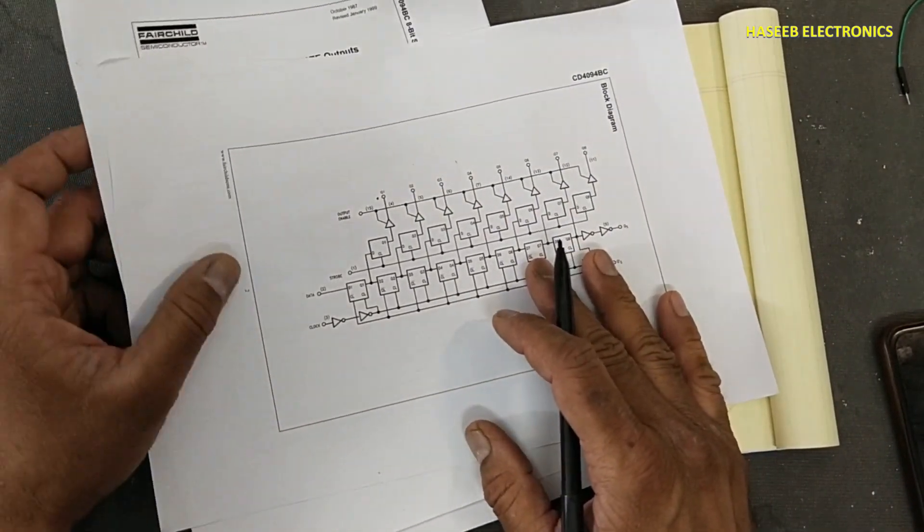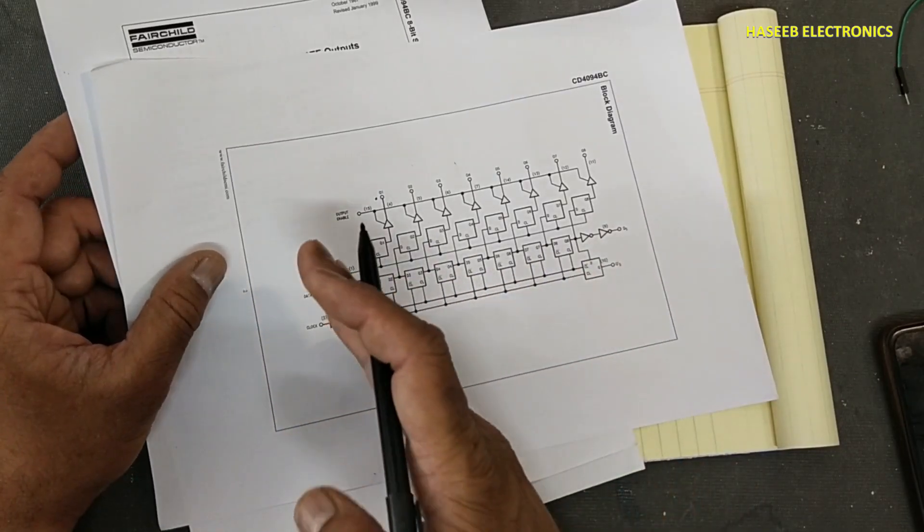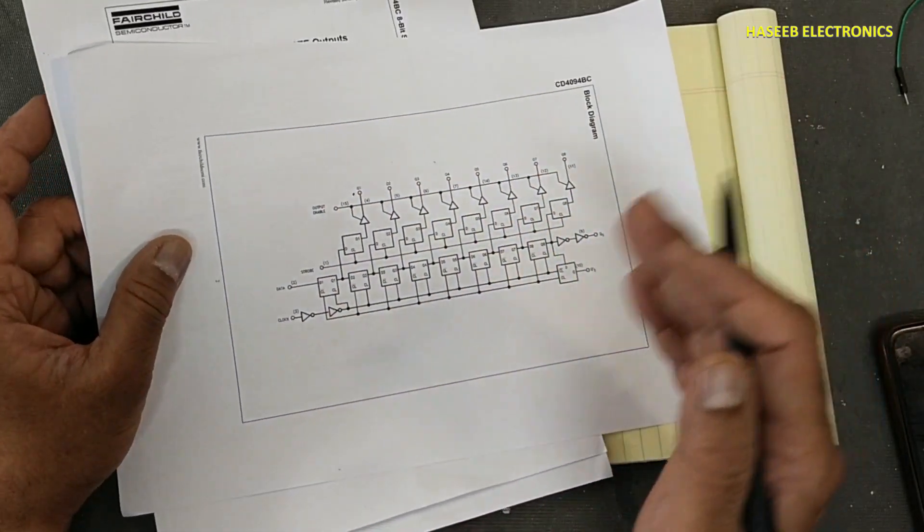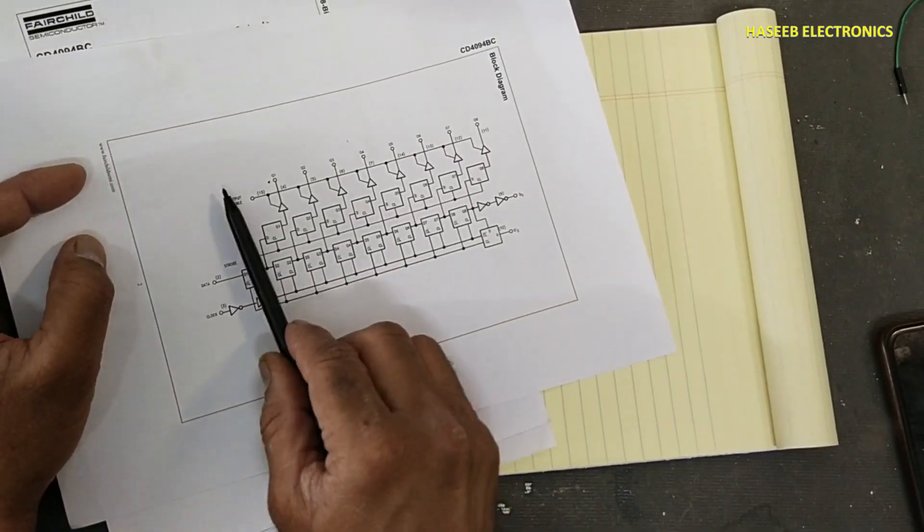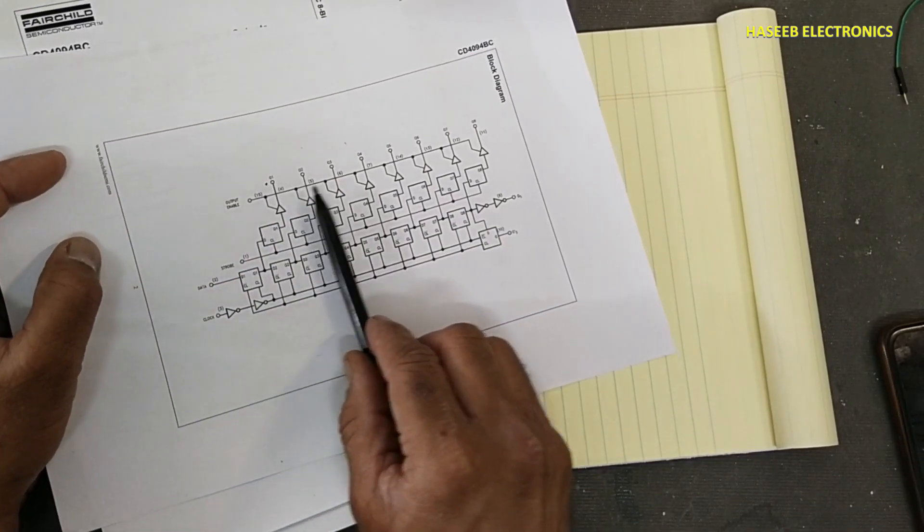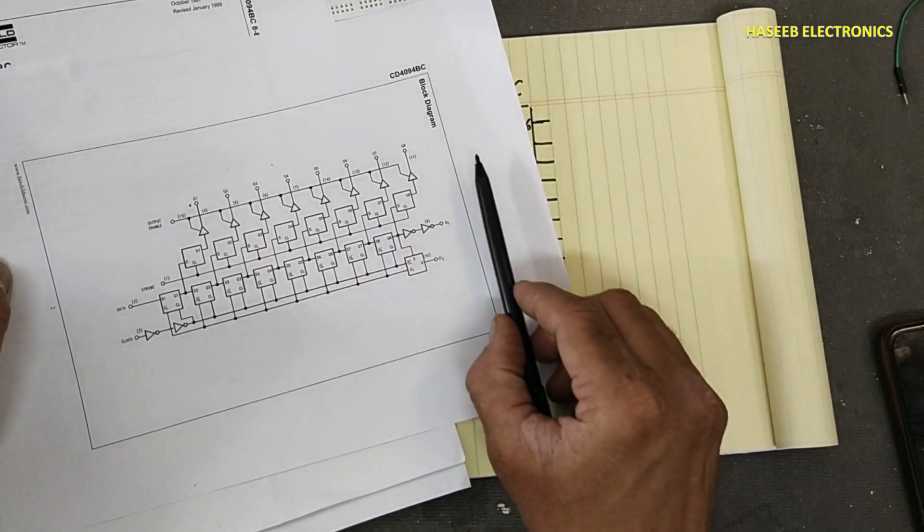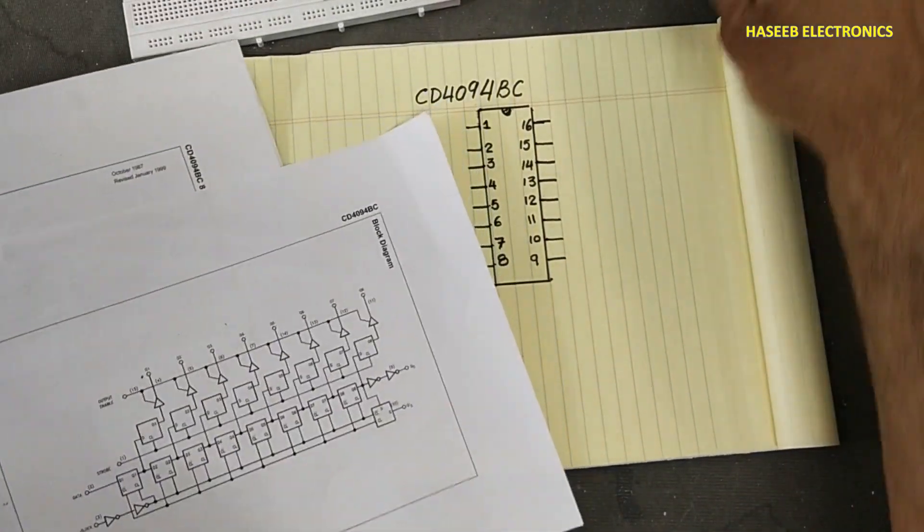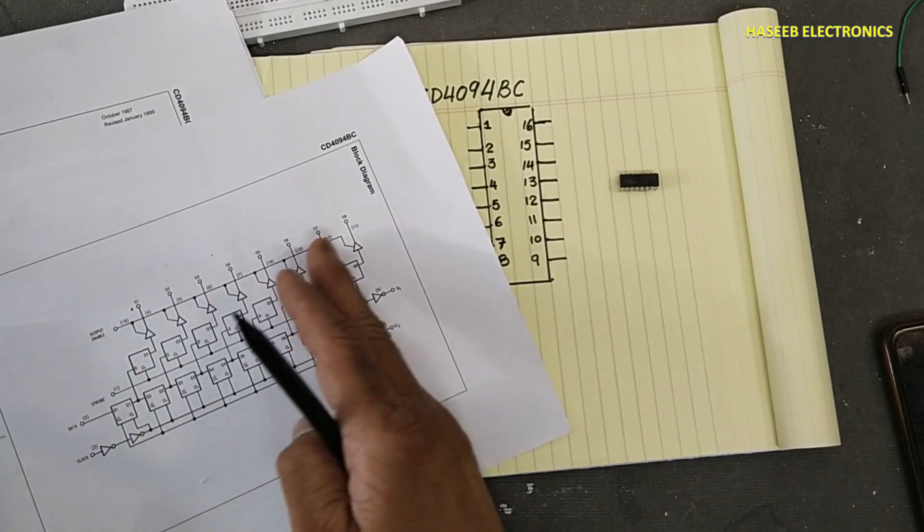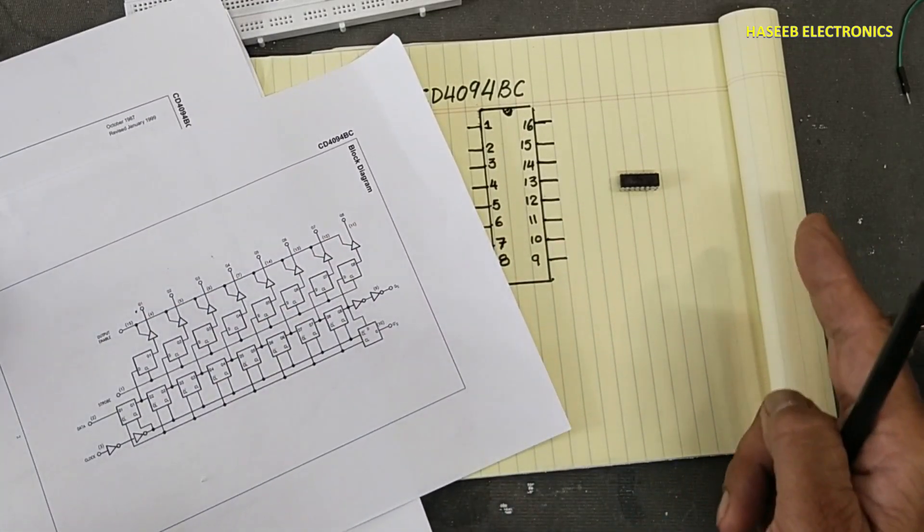If we want to cascade these ICs, for example two, three, four ICs, one data will enter from here and after passing these eight steps it will be injected to the next IC. So we can move this data into multiple ICs.